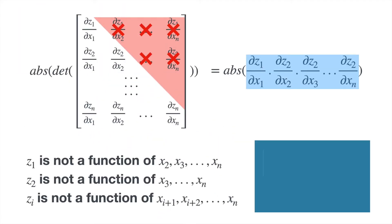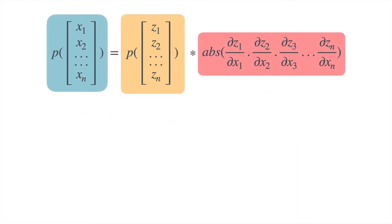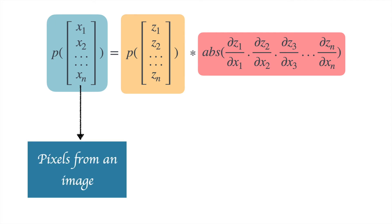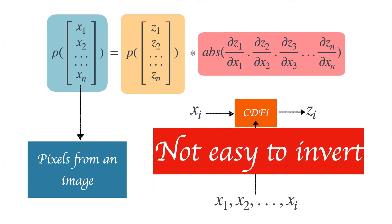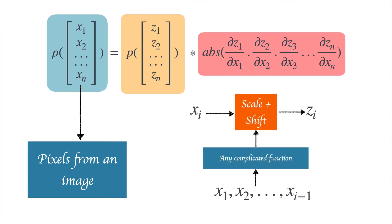This could be done by making sure that the autoregressive property was fulfilled. So for the case of images, this vector would be pixels from an image, and for any pixel i, the CDF for the corresponding transform would be a function of pixels from one to i, giving the transform to map x_i to z_i. But the issue with this function is that it's not easy to invert. To deal with this problem, a new kind of transform is introduced — an affine transform.